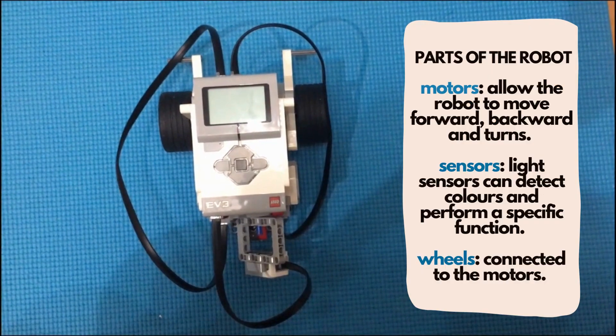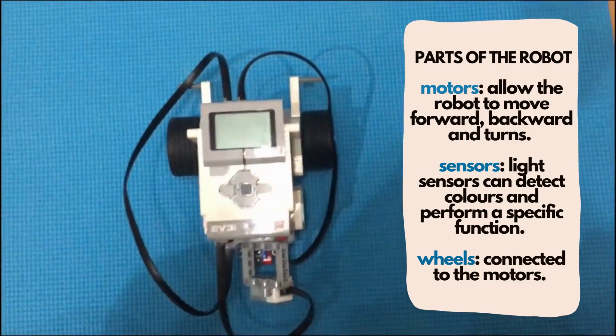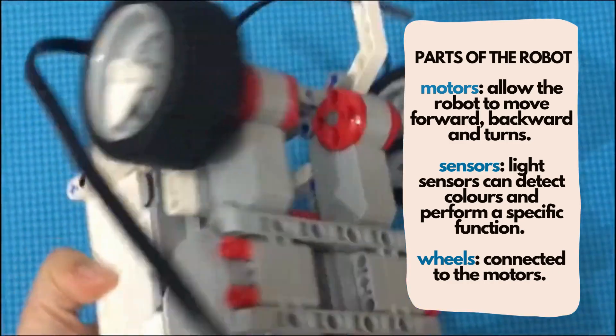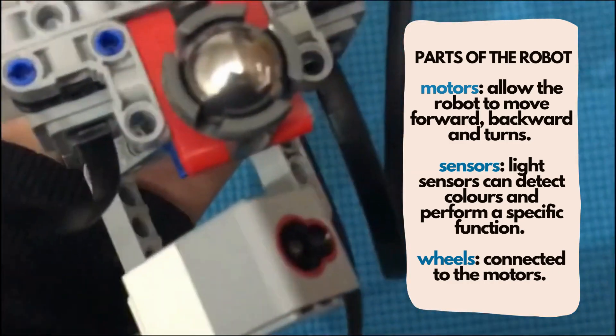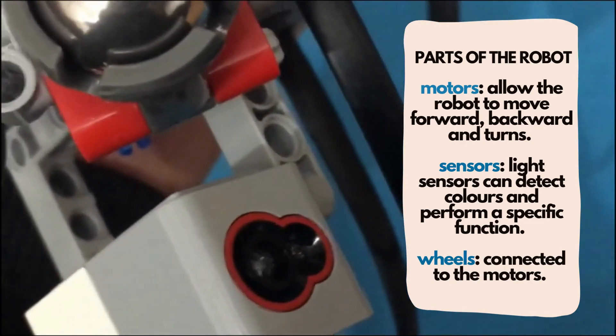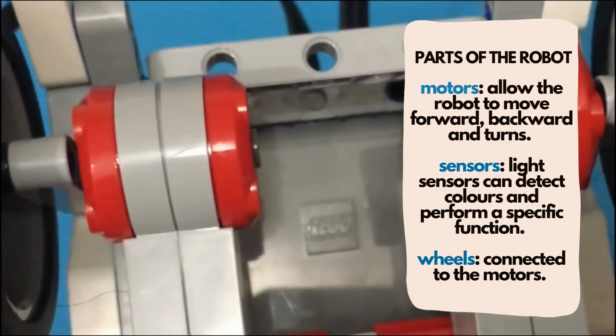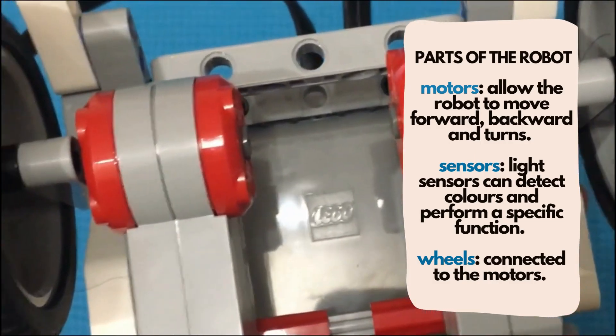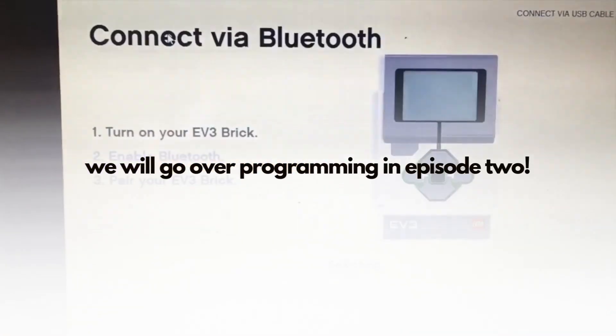So here we have our robot. As you can see, it is composed of the brick. Once we turn it over, you can see the two motors which allow the robot to move forward and backwards and left and right, as well as the sensor that can detect color. Depending on what we tell it to do, we can program it to detect a certain color and move forward or backward or do a variety of things. We also have the wheels, and once we turn it back over, we can now go on to our programming.